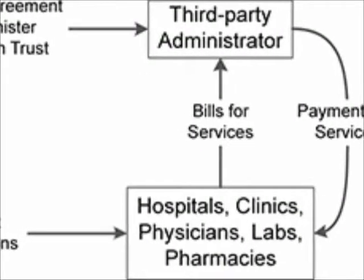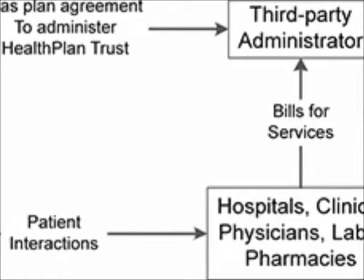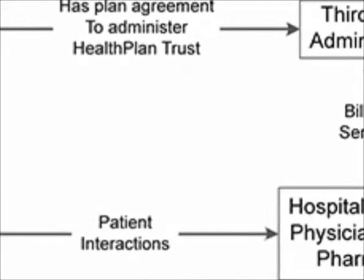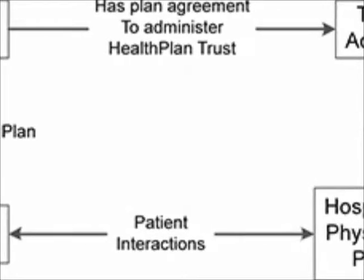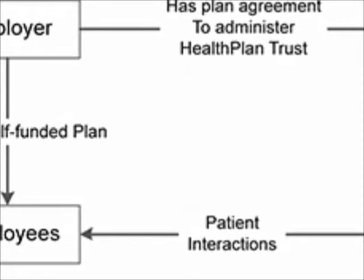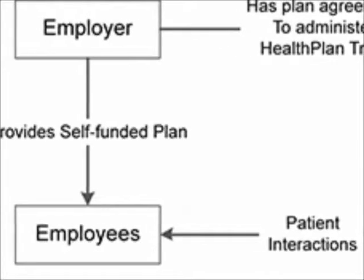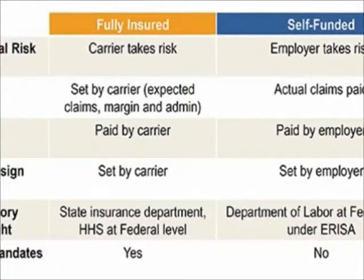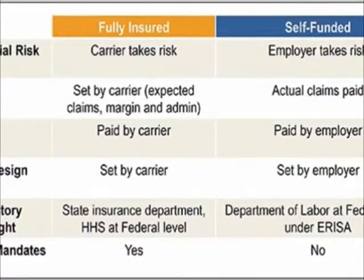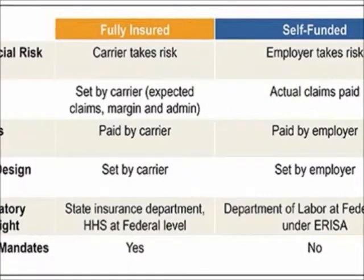Here is a flowchart involving the third-party administrator, insurance company, and employer-based health insurance schemes. Employer-based health insurance is extremely important for the US healthcare system — as of 2012, 58 percent of people are covered by these schemes. In fully insured plans, the carrier (the insurance company) takes the risk. In self-insured plans, the employer takes the risk.